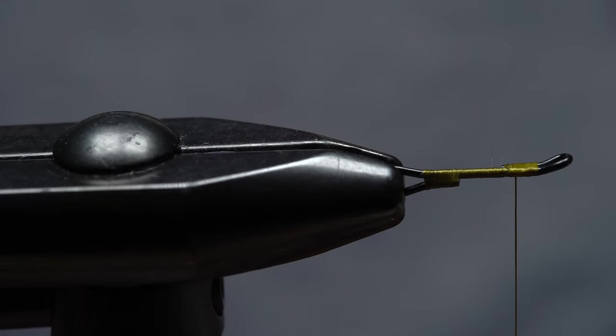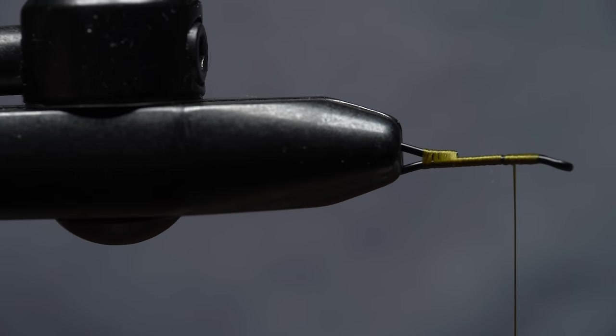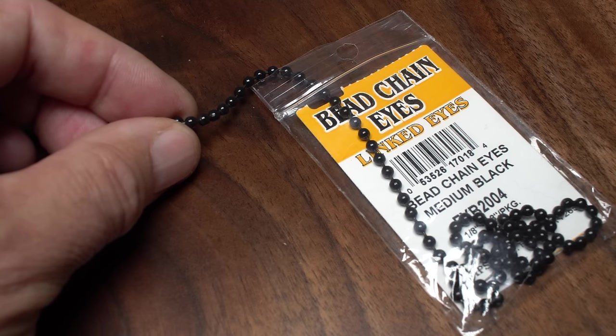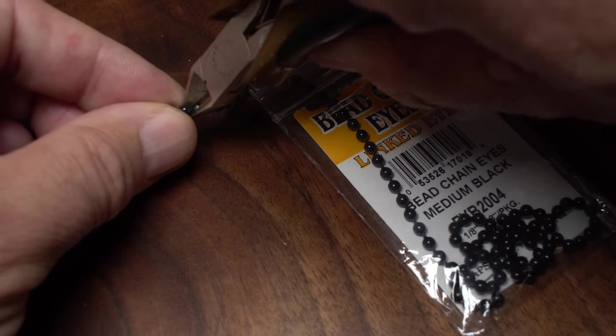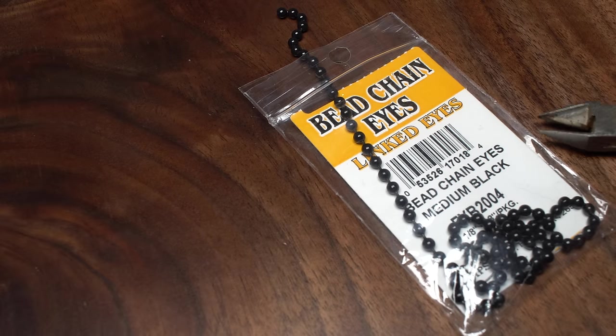Rotating your vise or flipping the shank over will make it easier to attach bead chain eyes to the fly. For the bead chain eyes, I like medium sized in black. The idea of these is not really to add weight to the fly, but just to enhance its look and keep it tracking properly. Snip two beads free from the chain.